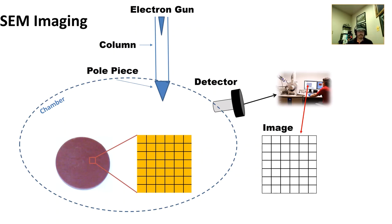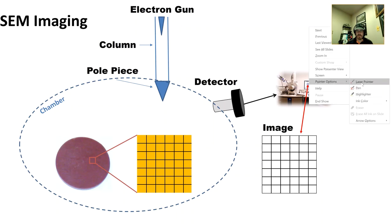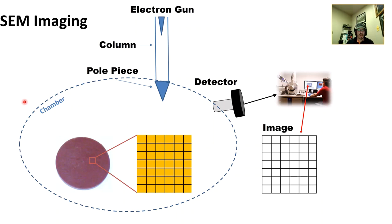This cartoon summarizes what we've covered in lectures one through three. I got the original version from someone else but it was wrong, so I've corrected and augmented it. The electron gun is where all the magic begins. There are three electron gun types: field emission, thermionic, and Schottky. Thermionic is the cheapest — works like a light bulb. The electron is then accelerated through the column.